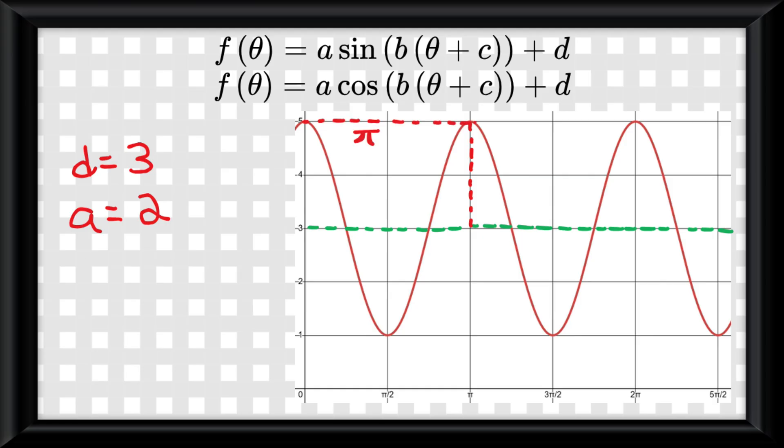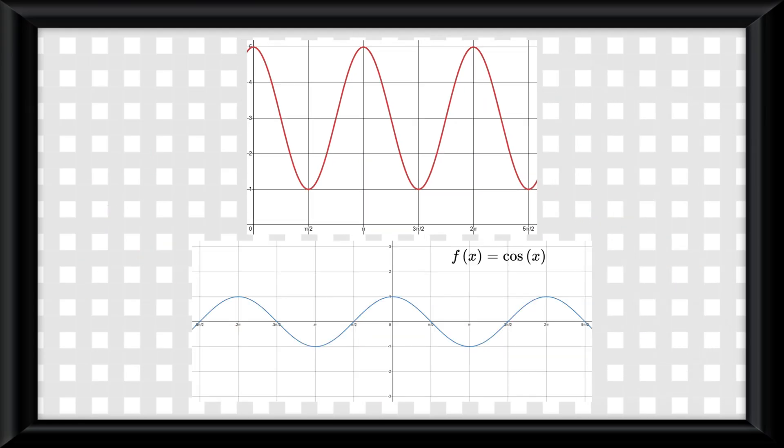Then we find the period, which is π, and put it under 2π, which is reduced to 2. Then we take either the sine or cosine parent graph and see what the phase shift would be to follow the pattern.